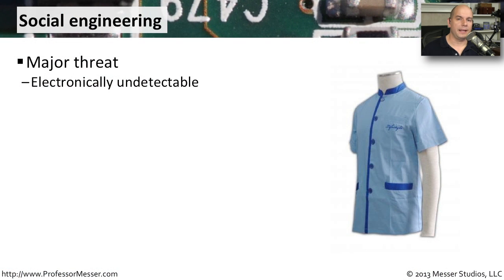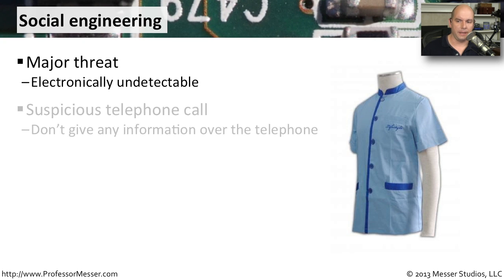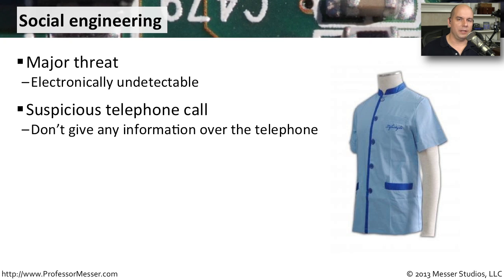One security technique that is impossible to detect electronically is something called social engineering. Social engineering is when somebody communicates with you directly on a social level to try to gather information from you or get you to do something. A common way for this social engineering to manifest itself is with a phone call.